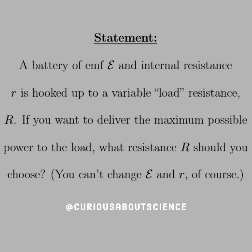So what we're asking now is how can we relate the EMF with the potential and deal with everything else — current, charge, and all that. This is a quick example problem. The statement reads: a battery of EMF, denoted as a curly E, with internal resistance little r, is hooked up to a variable load resistance big R. If you want to deliver the maximum possible power to the load, what resistance R should you choose? You can't change E and little r, of course.